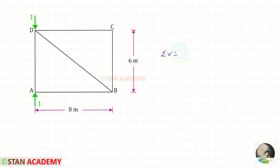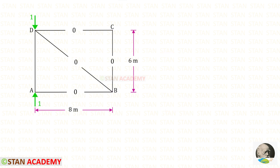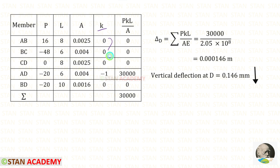Applying sigma V = 0 and sigma H = 0 at joint C, the member forces in CD and CB are zero. At joint B, applying sigma V = 0 gives Fbd = 0; applying sigma H = 0 gives Fab = 0. Taking joint A to find Fad: both Va (upward) and Fad (upward) are positive, giving Fad = −1. Entering all values of K and finding P·K·L / A: after adding we get 30,000. For the vertical deflection at D we get 0.146 mm, acting downwards.